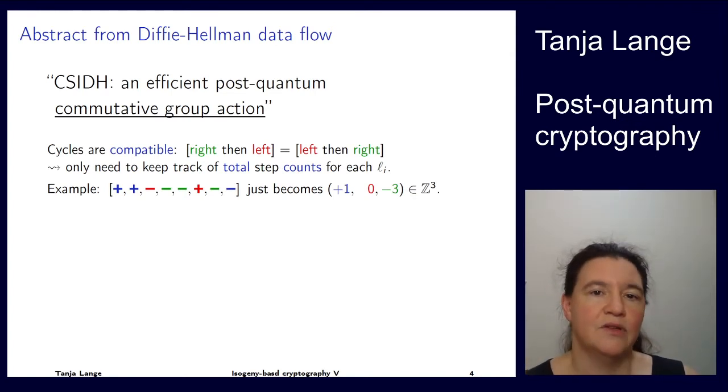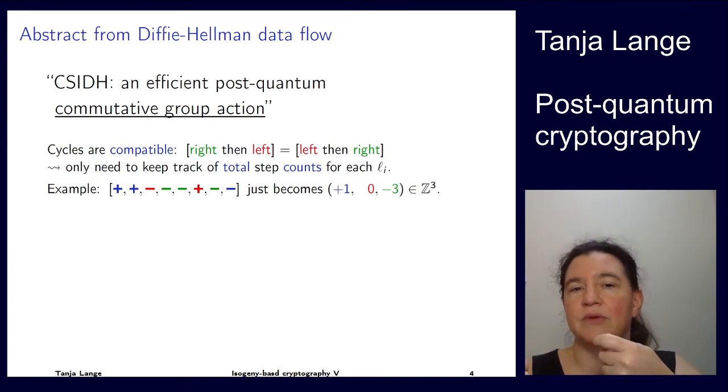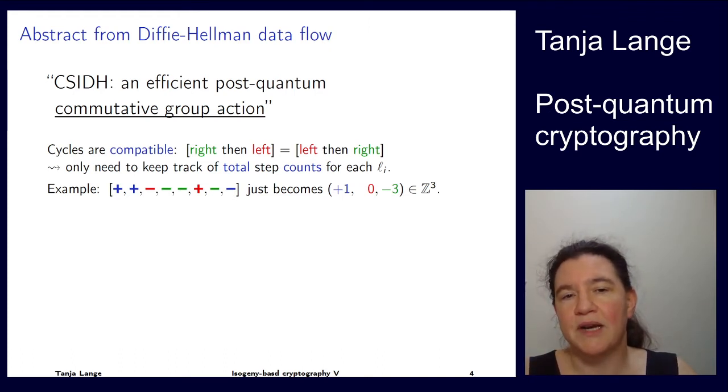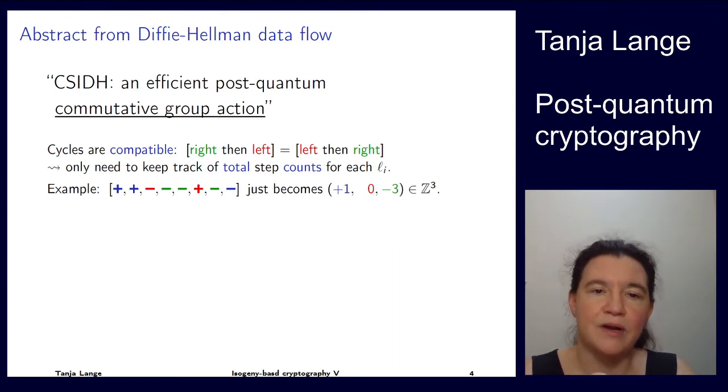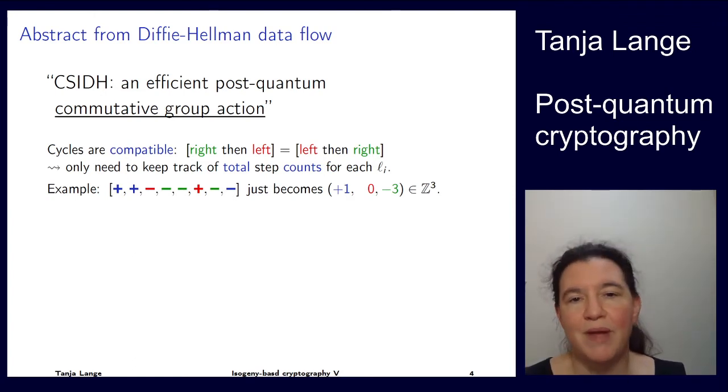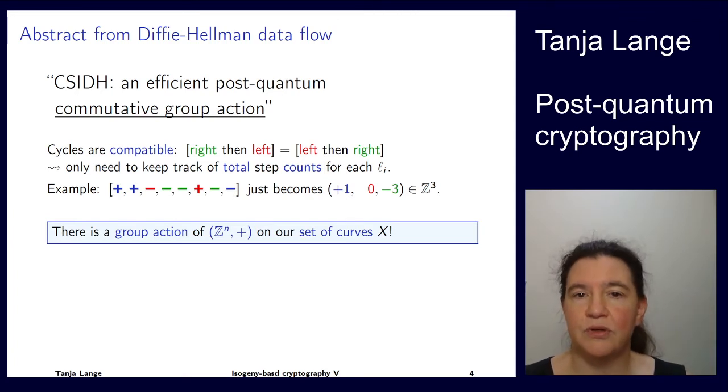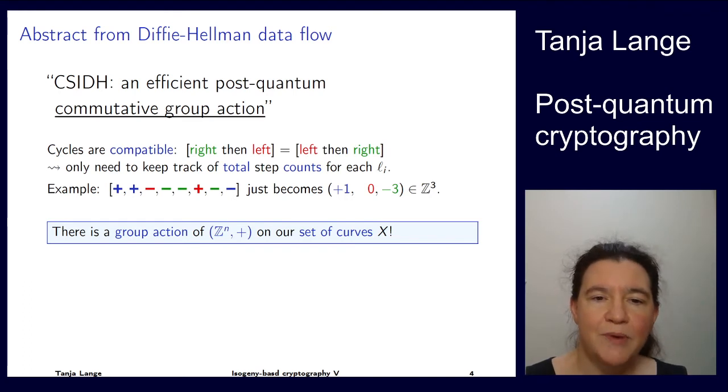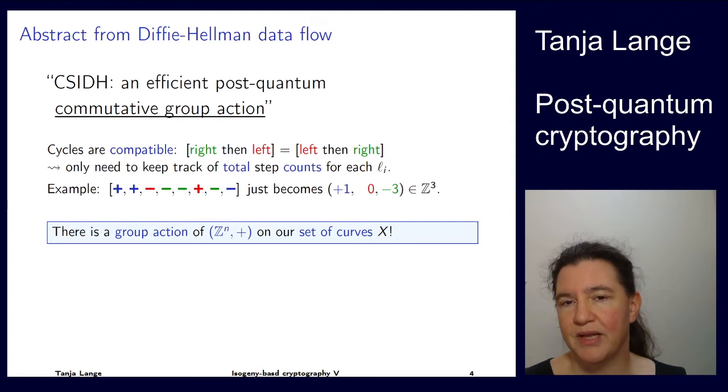When I showed you the graph in talk number three, I was going some steps in plus in some color and some steps in minus in some color, but actually the cycles are compatible. So instead of going minus clockwise and then one counter-clockwise on the five isogenies, we're actually not doing anything on the five isogenies. Alice has her vector, Bob has his vector, and their shared key is the sum of the vectors.